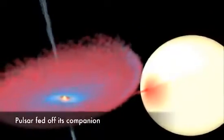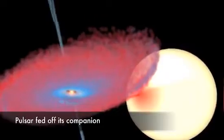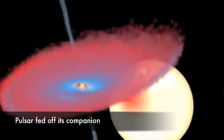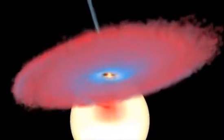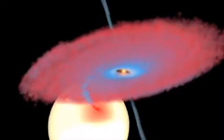The rapid spin of the pulsar tells us that the system once possessed a massive accretion disk as the pulsar stripped matter from its stellar companion. The leftover of this star is what we see today as the planet.